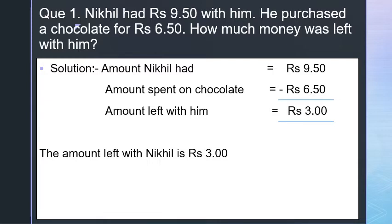Look at the solution. Amount Nikhil had is Rs. 9.50. Amount spent on chocolate is Rs. 6.50. To find the amount left with him, we have to subtract both the quantities.